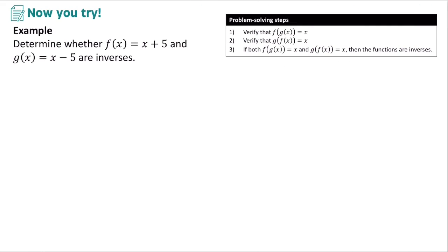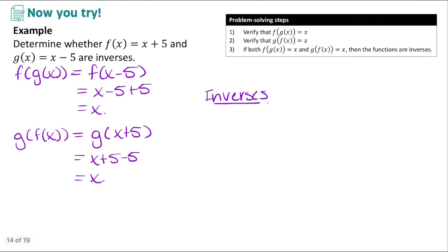Now pause the video and try this example on your own. Here we have f of x equals x plus 5 and g of x equals x minus 5. If I plug in x minus 5, I get x minus 5 plus 5, which simplifies to x. If I do g of f of x, I get x plus 5 minus 5, which equals x. Since both parts equal x, these two functions are inverses.